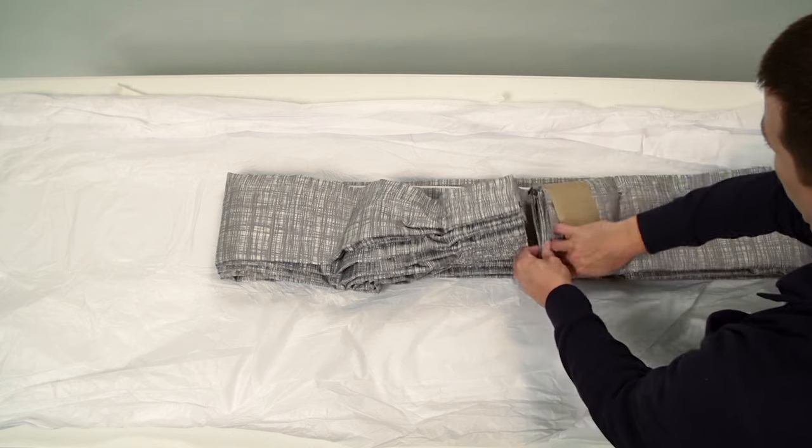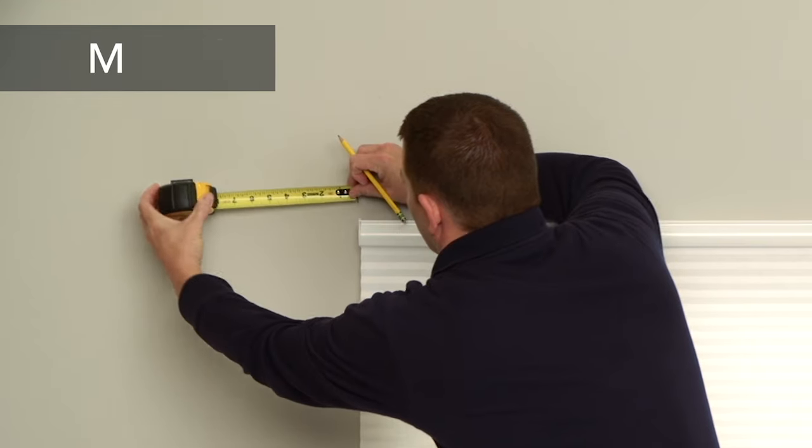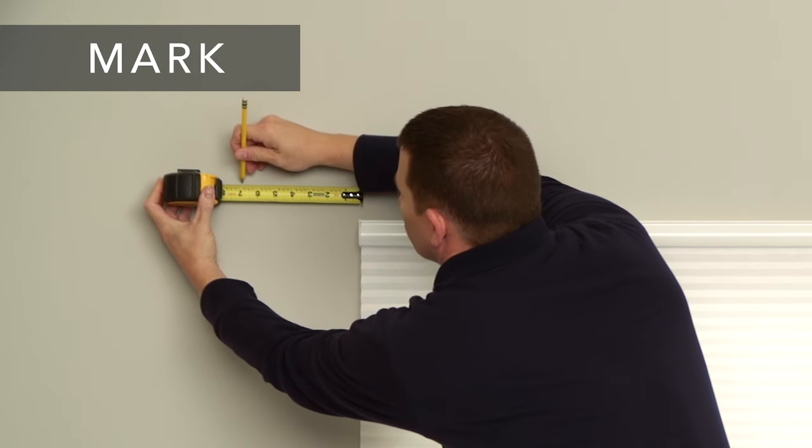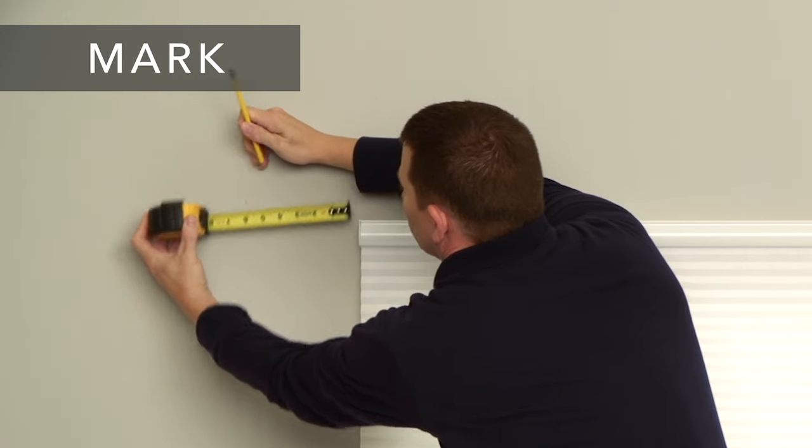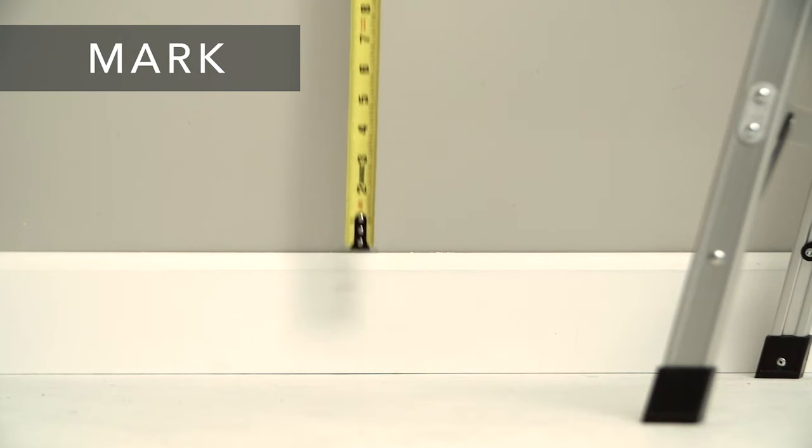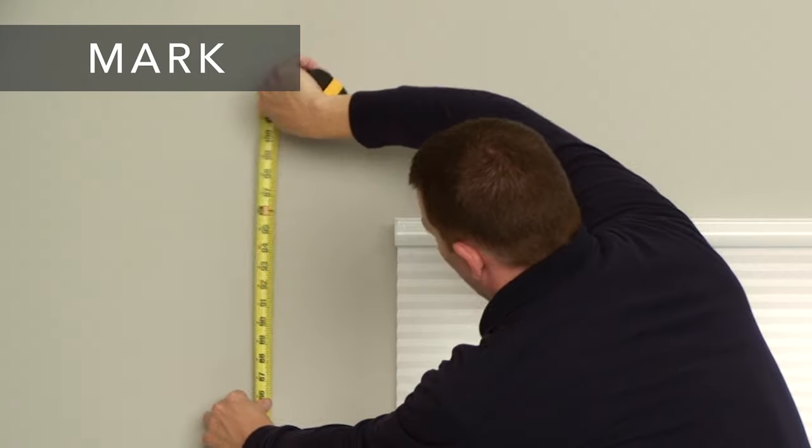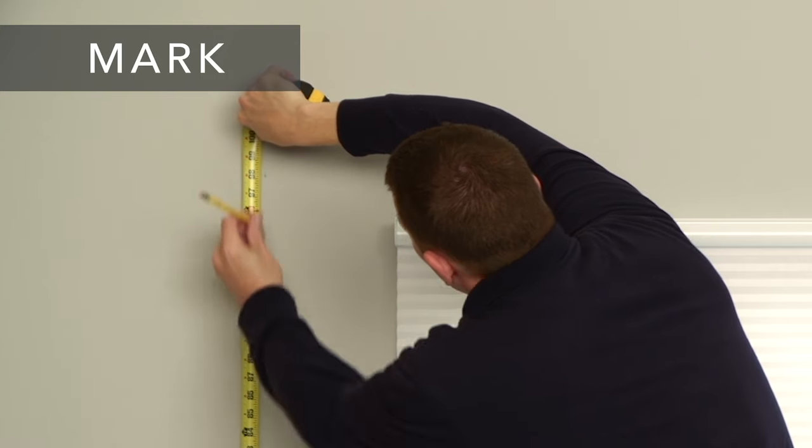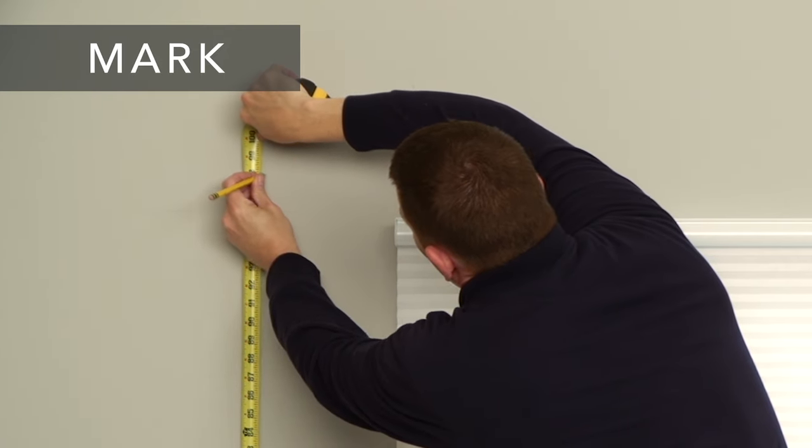Once you have confirmed the width, draw, and any stackback needed for your drapery, measure out from each edge of the window accordingly and place a mark. Based on the desired length of the drapery, determine where the top of the rod will be and make a mark. Do this on both sides of the window, making sure that the width and length marks intersect.